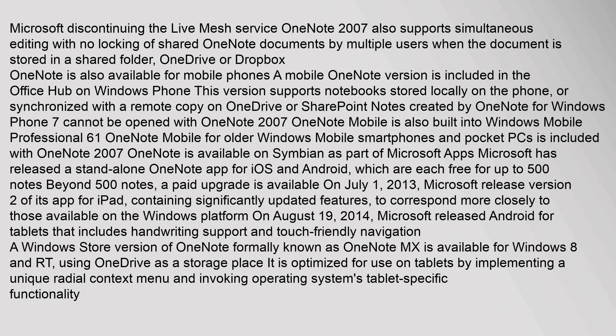Notes created by OneNote for Windows Phone 7 cannot be opened with OneNote 2007. OneNote Mobile is also built into Windows Mobile Professional 6.1, and OneNote Mobile for older Windows Mobile smartphones and Pocket PCs is included with OneNote 2007. OneNote is available on Symbian as part of Microsoft apps. Microsoft has released a standalone OneNote app for iOS and Android, each free for up to 500 notes; beyond 500 notes, a paid upgrade is available. On July 1, 2013, Microsoft released version 2 of its app for iPad with significantly updated features. On August 19, 2014, Microsoft released Android for tablets with handwriting support and touch-friendly navigation. A Windows Store version of OneNote, formerly known as OneNote MX, is available for Windows 8 and RT.